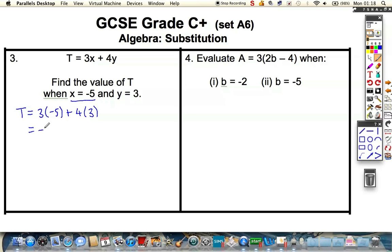Remember, 3 times minus 5 is minus 15, plus 12. Again, we're just going to pay attention. We're on minus 15. We're going 12 steps towards 0, which leads us on minus 3.